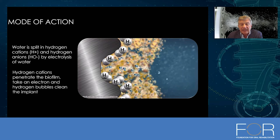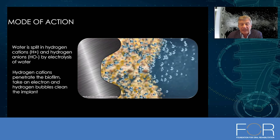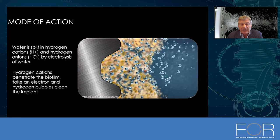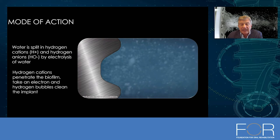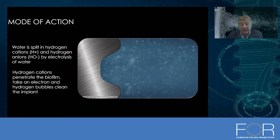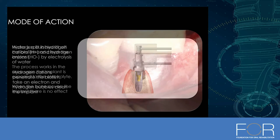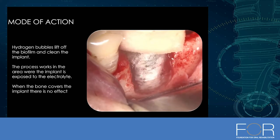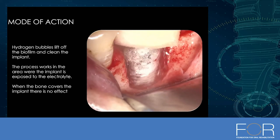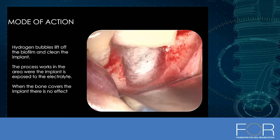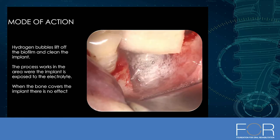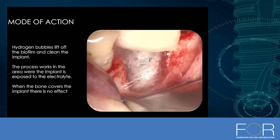Those bubbles lift off the biofilm. This device does not augment and does not cure peri-implantitis — it removes the biofilm and provides a surface which is able to re-osseointegrate. Previously, misplaced implants could not be treated because even if cleaned, without augmentation they reinfect and should be removed. This video shows the treatment with the electrolytic approach — you can see the hydrogen bubbles lifting off the bacterial biofilm, cleaning the implant surface, and even removing hydrocarbons to make the implant hydrophilic again.